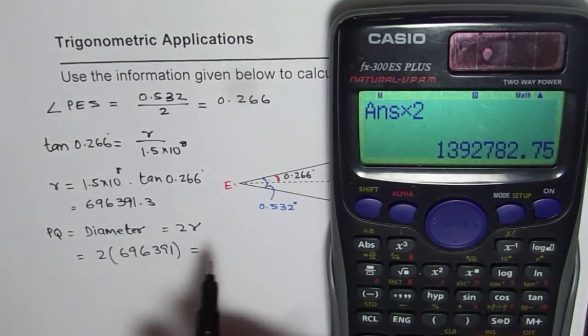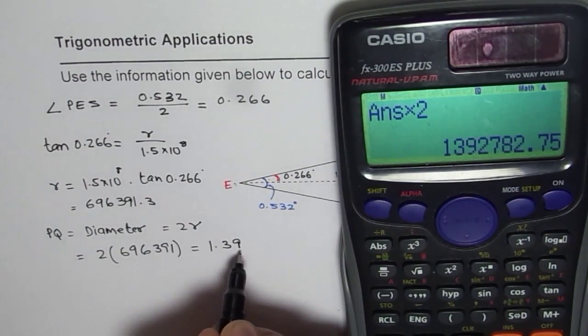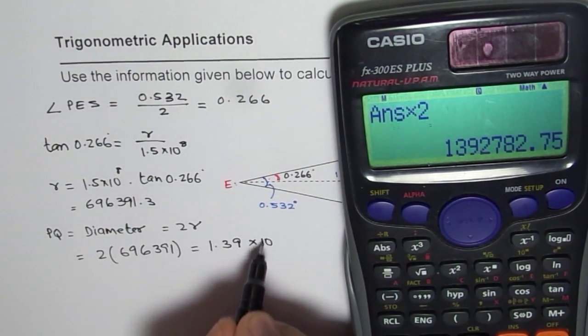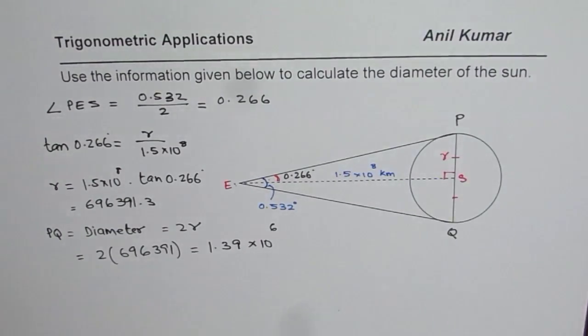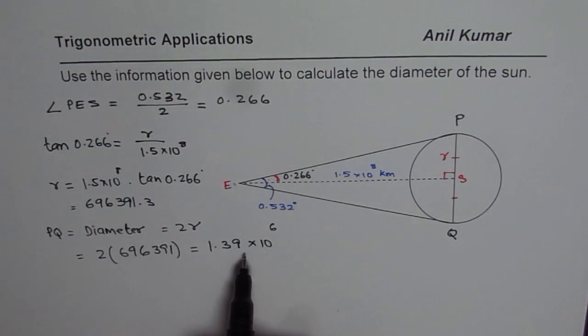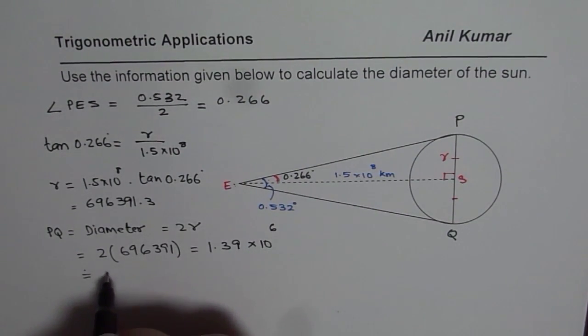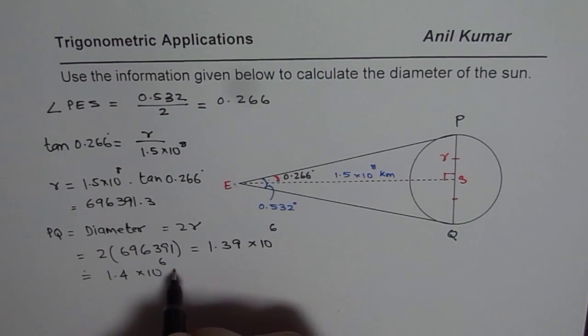So we get 1.39. So we get 1.39, into, I'll write 10 to the power of 6. So that is what we get. 6 zeros. So 1.39 into 10 raised to power 6. So it could be approximated to 1.4 into 10 raised to power 6 kilometers.